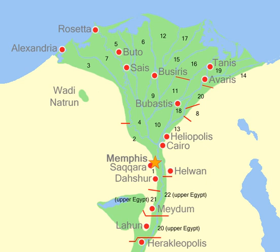Some, like Xois in the Nile Delta or Khent in Upper Egypt, were first mentioned on the Palermo Stone, which was inscribed in the Fifth Dynasty. The names of a few, like the nome of Bubastus, appeared no earlier than the New Kingdom. Under the system that prevailed for most of Pharaonic Egypt's history, the country was divided into 42 nomes.